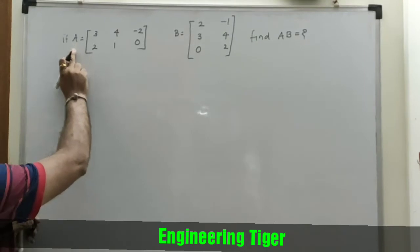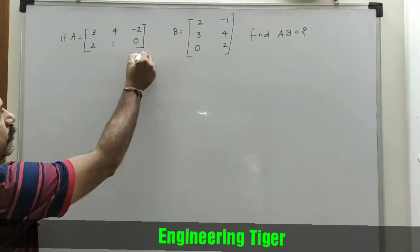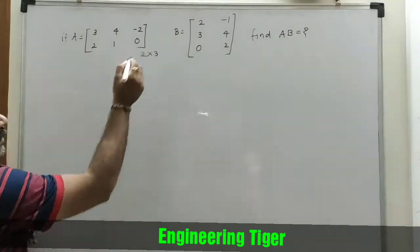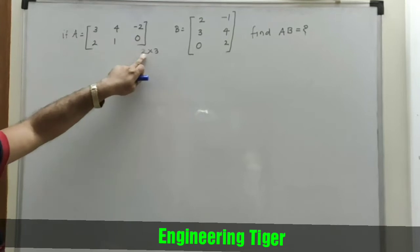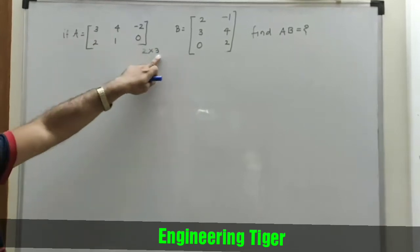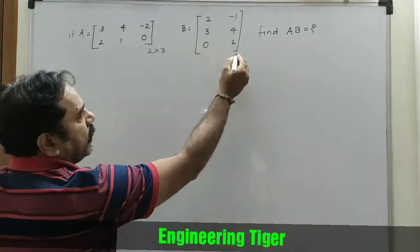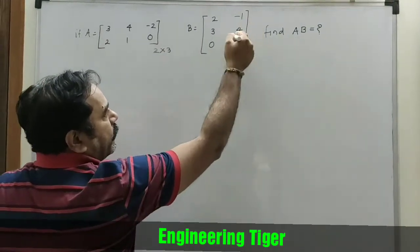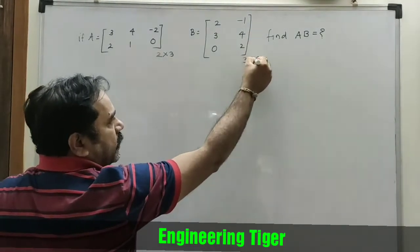Matrix A has order 2 by 3. 2 by 3 means the number of rows are 2 and number of columns are 3. Similarly, matrix B has order 3 by 2, where the number of rows are 3 and columns are 2.